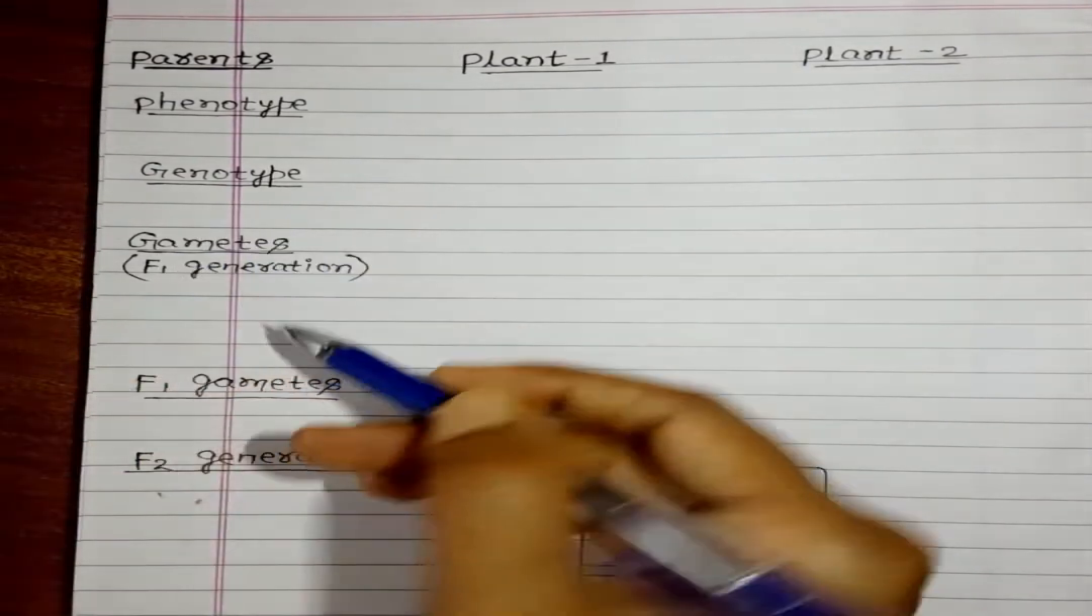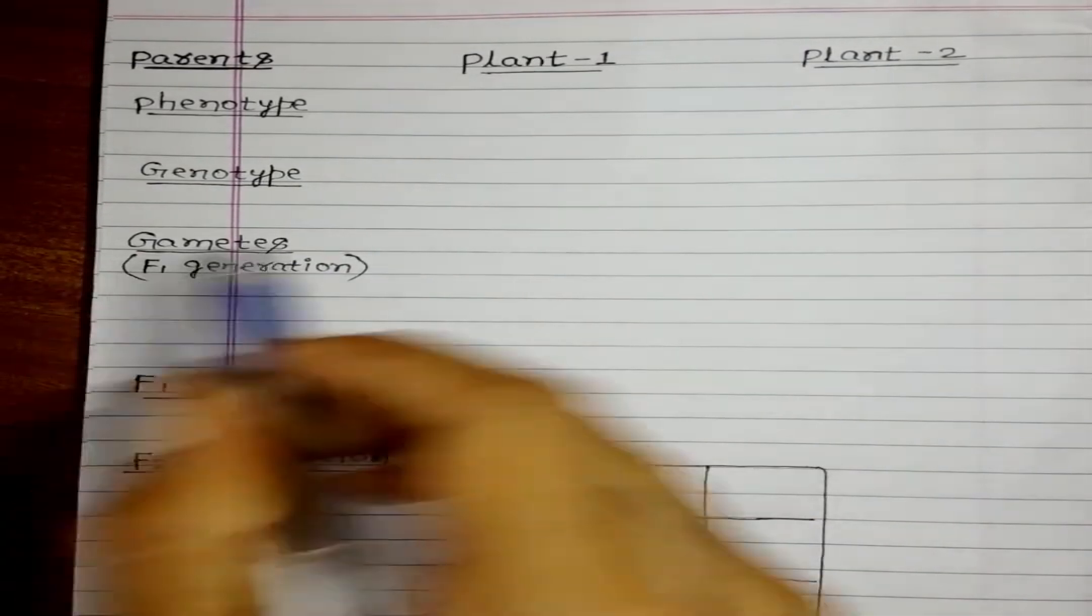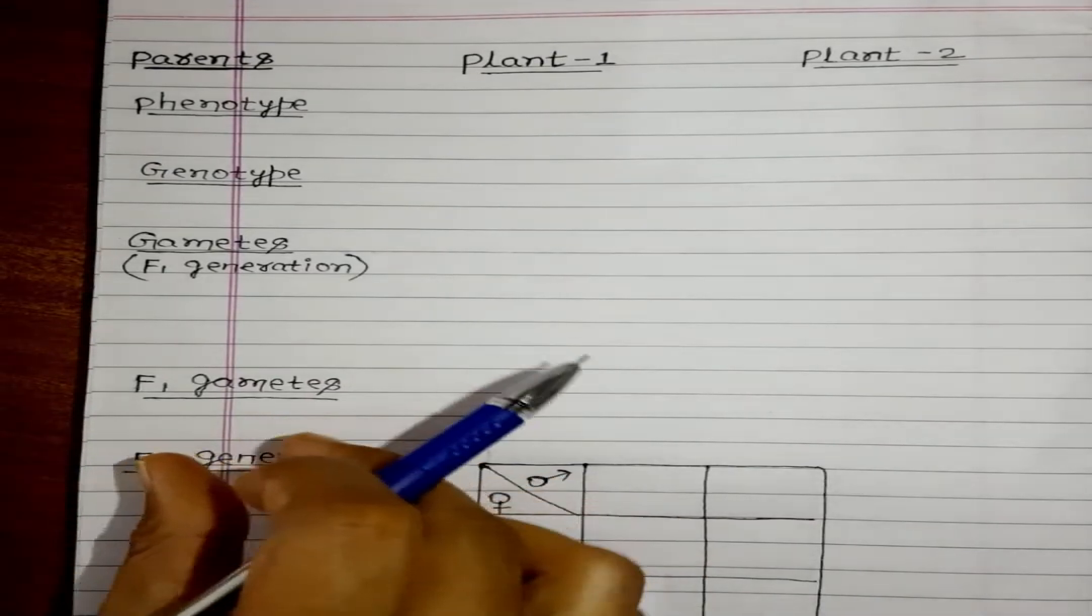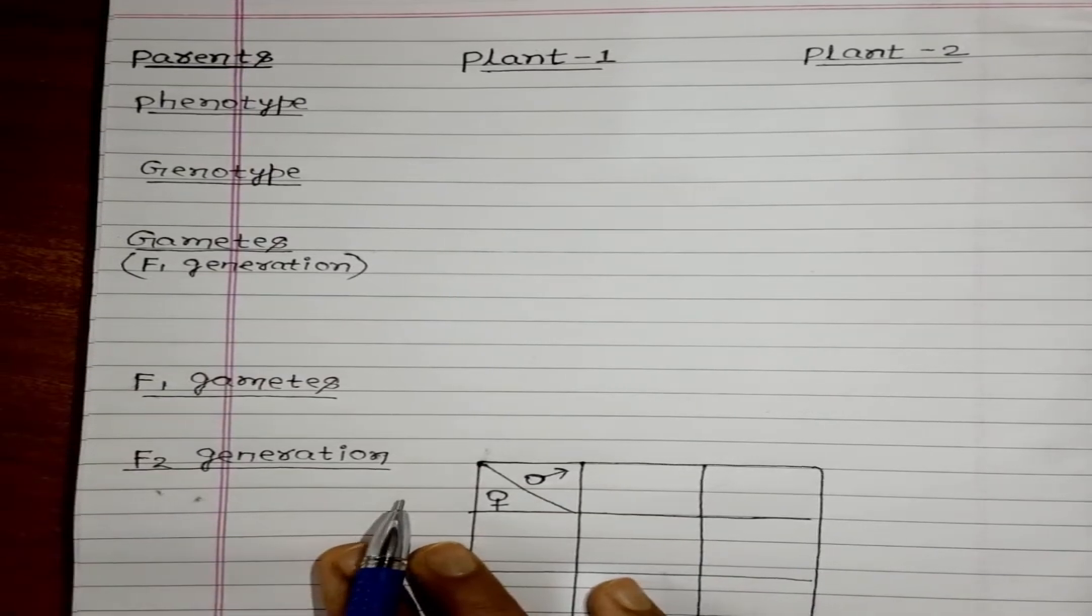Then we will write phenotype - how it looks. Then genotype - how the gametes are, means how we represent the gametes. Then the gametes produced in F1 generation. Then we will write the F1 gametes. Afterwards we will write the F2 generation. Then phenotypic ratio and genotypic ratio.